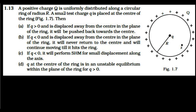A positive charge Q is uniformly distributed along a circular ring of radius R. A small test charge q is placed at the center of the ring. We have to choose which of the given options are correct regarding this charge placed at the center.